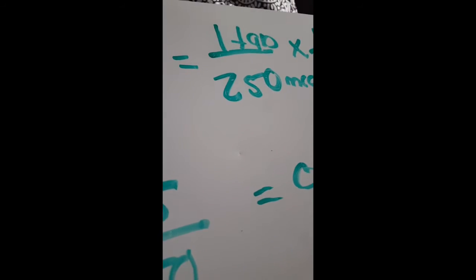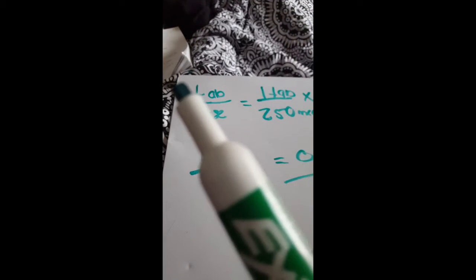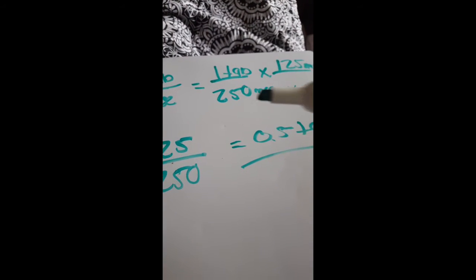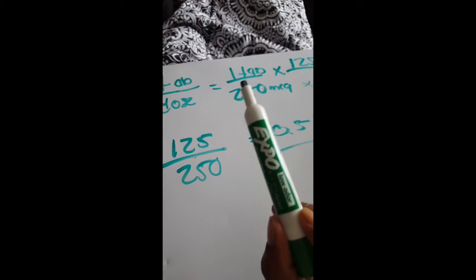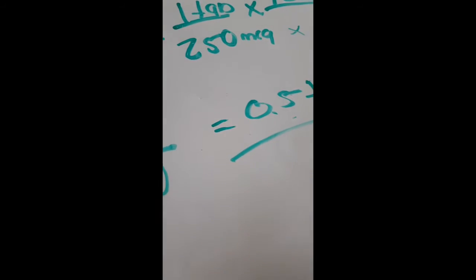Now to the nearest half tablet — but you can't round this up because then you're giving your patient too much. So it's just a half tablet. There's your answer. So tabs per dose: what's available is one tablet is 250 micrograms. Then the provider ordered 125 micrograms to be taken. So then you times that across, divide that and you get that the patient has to take a half tab of levothyroxine.